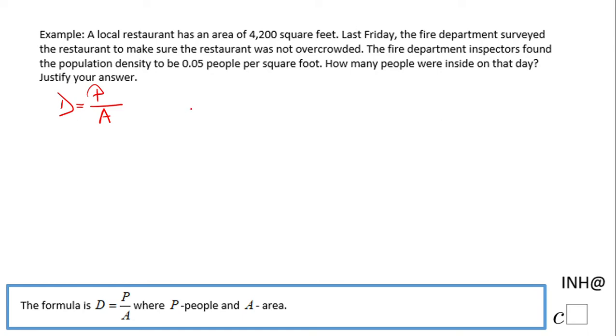In our case, this equation becomes 0.05, that's the density given, equals P, the variable we need to solve for, divided by 4,200, the area.